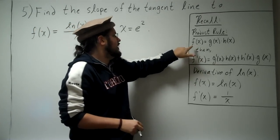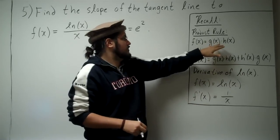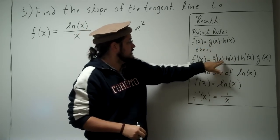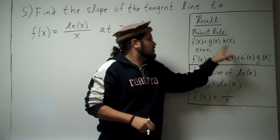So the product rule states, if you have f(x) = g(x) times h(x), so you have two functions, then f'(x) is equal to the derivative of g times just h plus the derivative of h times just g.